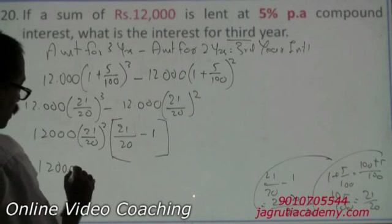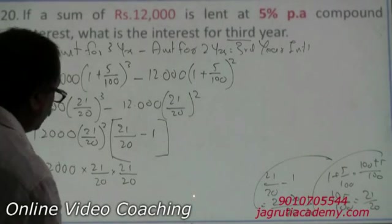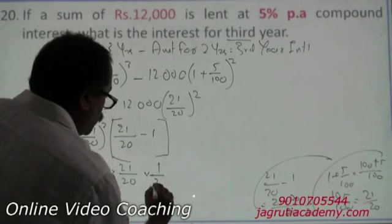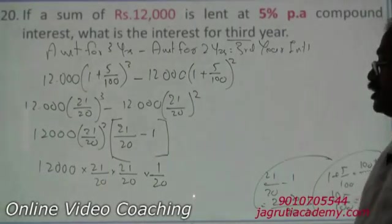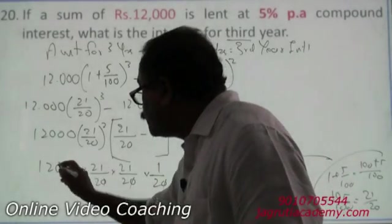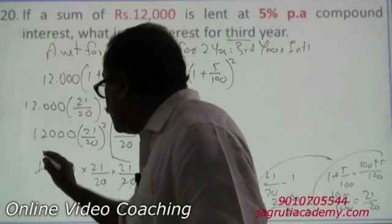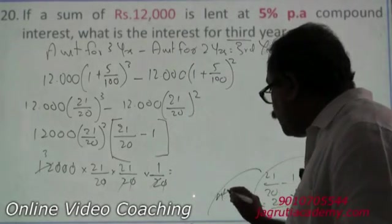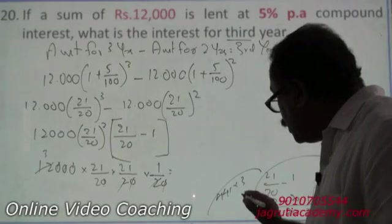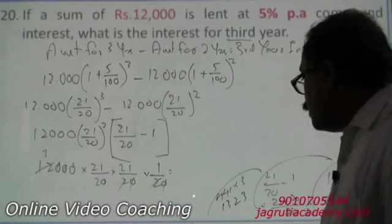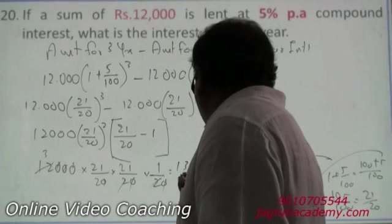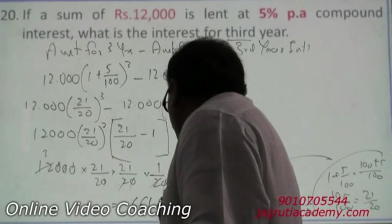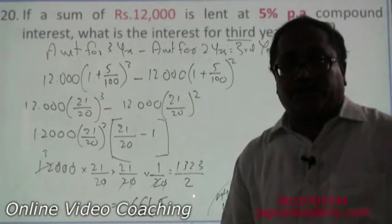The result is 12,000 × (21/20) × (21/20) × (1/20). Cancelling zeros and simplifying: 21 × 21 = 441, so we get 441 × 3 ÷ 2 = 1323 ÷ 2 = 661.5. This is your third year interest.